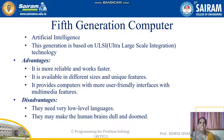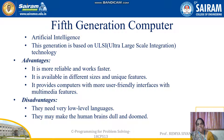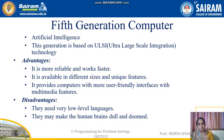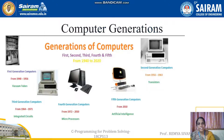Fifth generation computers make use of artificial intelligence. They are based on ULSI — Ultra Large Scale Integration — technology. They offer very high speed, lower cost, large data storage, and very small machine size. A disadvantage is that they make the human brain dull by relying on AI. These are the five generations of computers, from first to fifth, spanning 1940 to 2020, each classified based on the technology used.